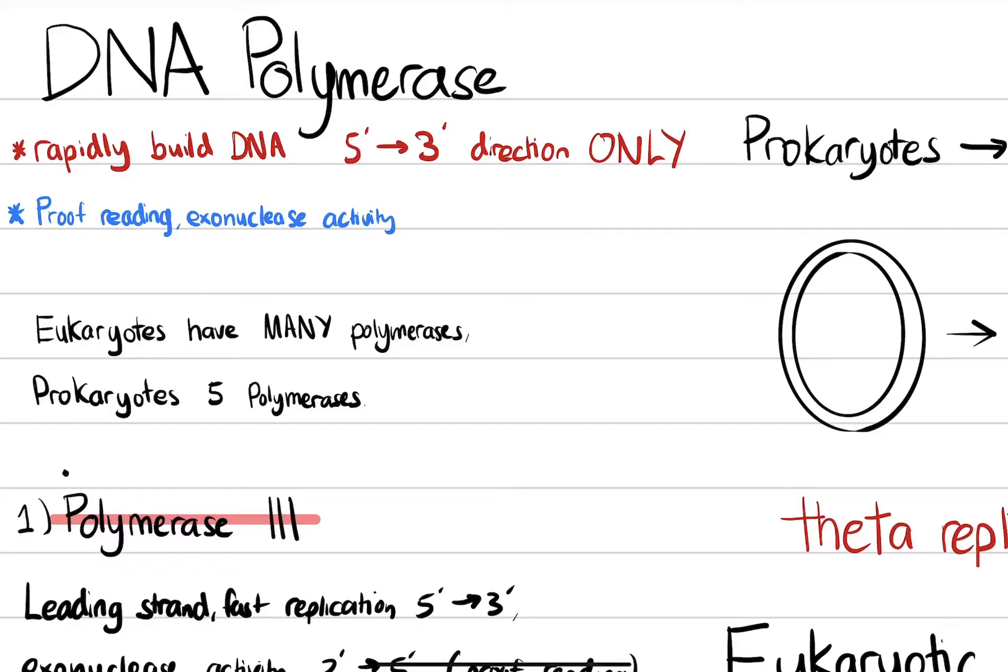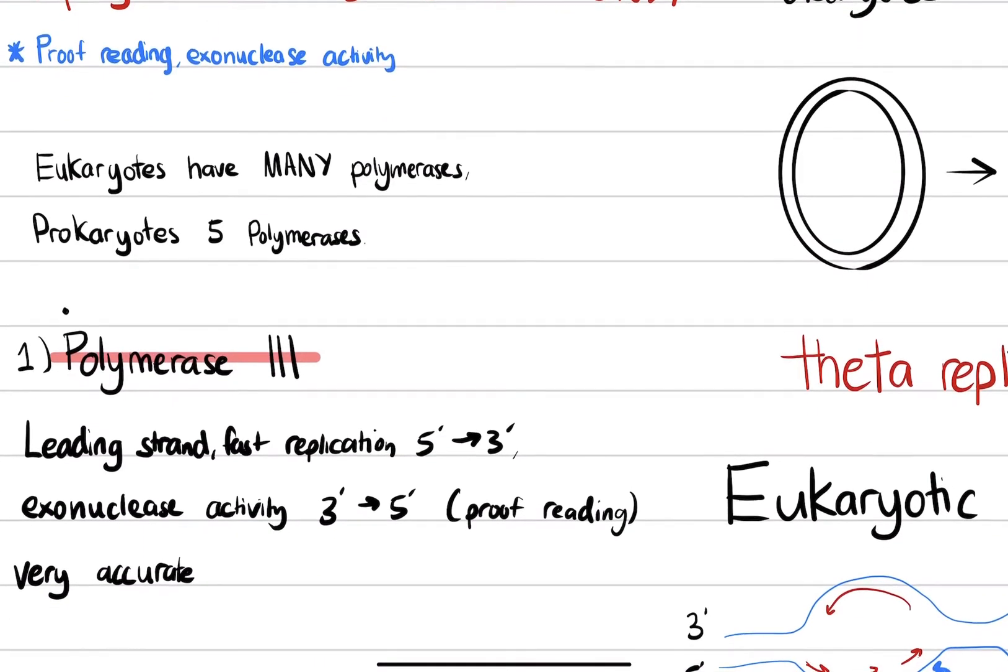So eukaryotes have many kinds of DNA polymerases, and there are five kinds that are today identified. But not all of those five are important for the MCAT or for AP or IB biology. There are only really two polymerases we have to focus on.